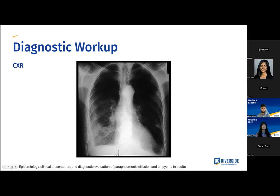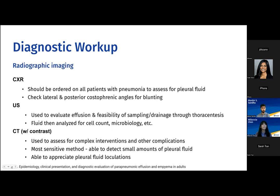We can also check for a meniscus sign. The reason why we would want to use other imaging methods, however, is because in around 10% of cases the pleural effusions will be missed due to possibly consolidation or other factors covering the effusion. So we'll move on to ultrasound, which is used to evaluate effusion and feasibility of sampling or drainage through thoracentesis, and fluid will be collected which can be analyzed for cell count and microbiome, etc.